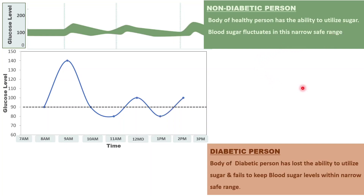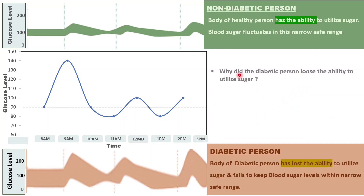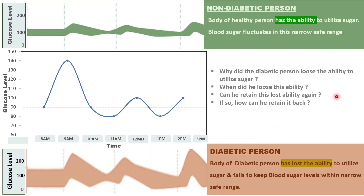The body of a diabetic person has lost the ability to utilize sugar and fails to keep the blood sugar level within a safe range. Why did a diabetic person lose the ability to utilize sugar and when did he lose this ability? Can he retain this lost ability again, and if so, how can he retain it back? I shall be answering these questions in this video.